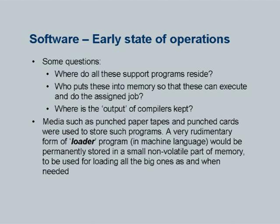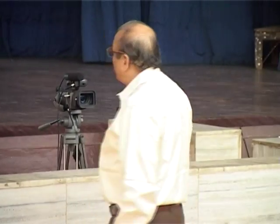So there are some questions. Where do all these support programs reside? Who puts these in memory so that they can execute and do the assigned job? And where is the output of the compiler kept? Well, all of us seem to know the answer: disk. Everything is on the disk — the functions are on the disk, the compiler sits on the disk so that when you say C++ the compiler gets loaded into memory and executes to read our program as data and translate it. The .o files and the a.out files are kept back on the disk.